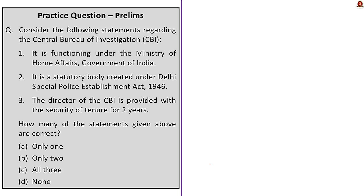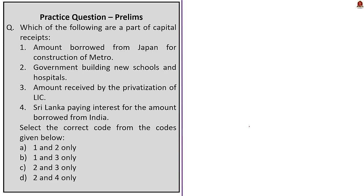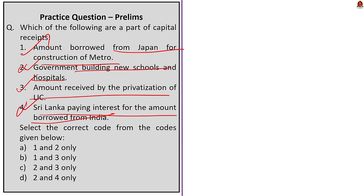Now let us move on to the preliminary practice question discussion. The first question asks you to find which of the following are part of capital receipts. Statement 1 — amount borrowed from Japan for construction of Metro — is correct, it comes under capital receipts. Statement 2 — government building new schools and hospitals — does not come under capital receipts, so it is incorrect. Statement 3 — amount received by the privatisation of LIC — is correct, it comes under capital receipts as it involves reduction in government assets. Statement 4 — Sri Lanka paying interest for the amount borrowed from India — is not a capital receipt; interest payments come under revenue receipts. The correct answer is option B: 1 and 3 only.